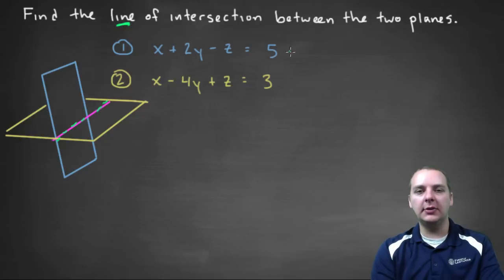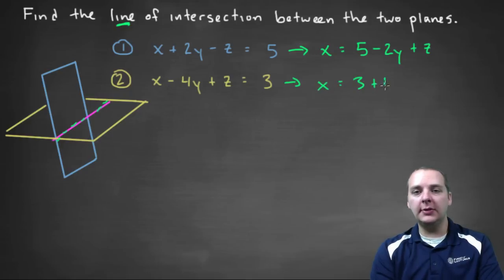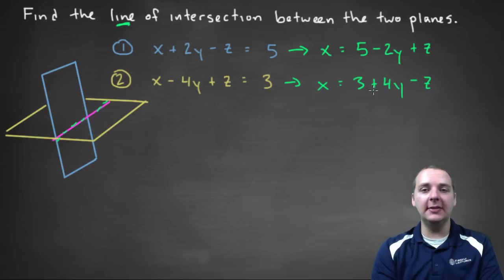Alright, so let's start maybe by solving both of these guys for let's say x. So x would be five minus two y, plus z, and in the second equation x would be three, plus four y, minus z. And so since this is x, and this is x, that means that these two guys must be the same. If they're both x, then these guys must be equal to each other.